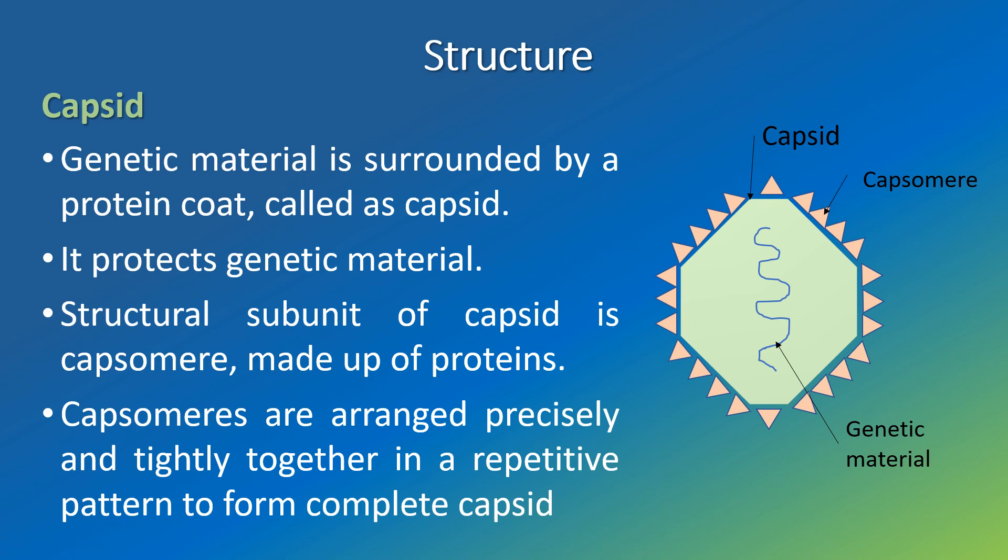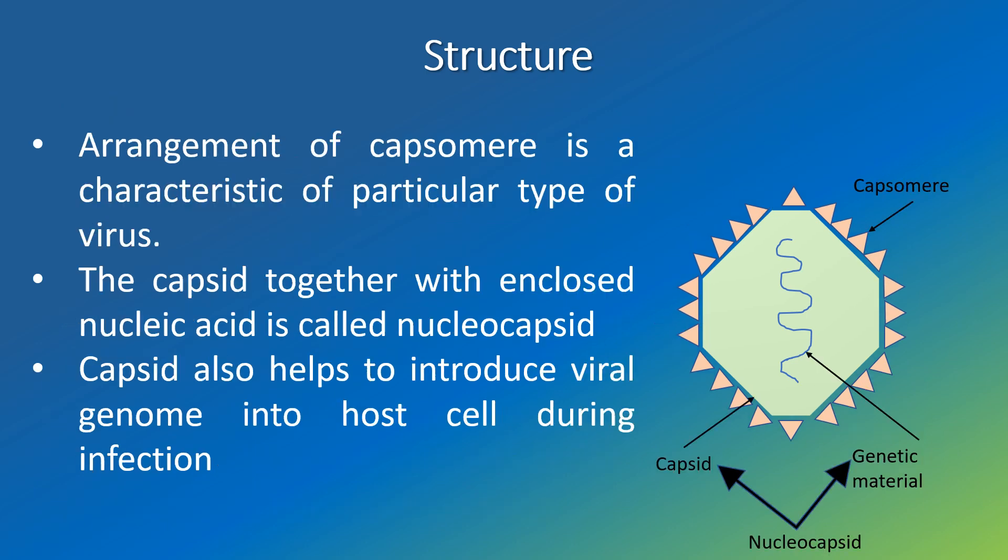Capsid: the genetic material is surrounded by a protein coat which is called the capsid. It protects the genetic material. The structural subunit of the capsid is the capsomere, which is made up of proteins. Capsomeres are arranged precisely and tightly together in a repetitive pattern to form the complete capsid. The arrangement of capsomeres is a characteristic of a particular type of virus. The capsid together with the enclosed nucleic acid is called the nucleocapsid. The capsid also helps to introduce the viral genome into the host cell during infection.